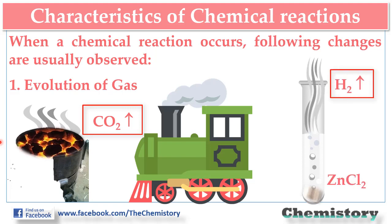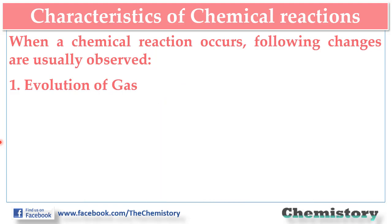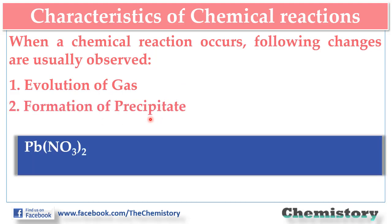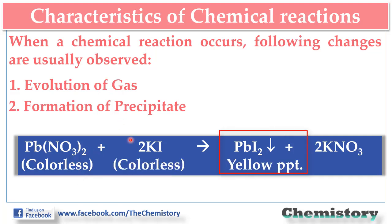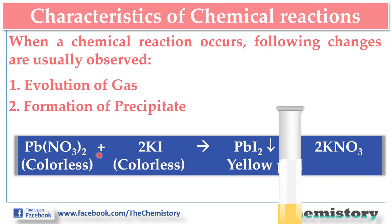Sometimes during a reaction, we also get insoluble substances, which we call precipitates. For example, here we see a yellow precipitate of lead iodide, that is, a yellow precipitate of PbI2.